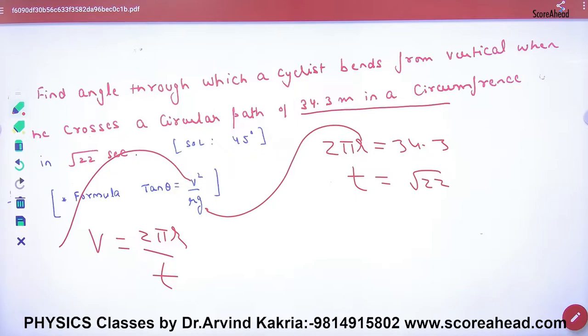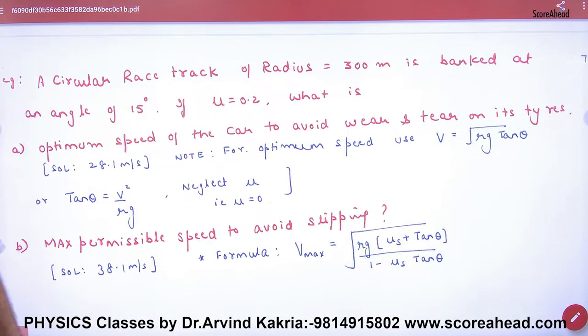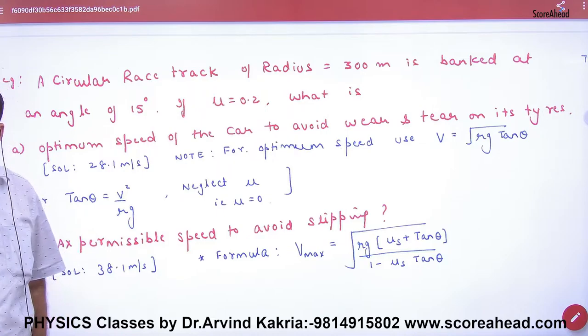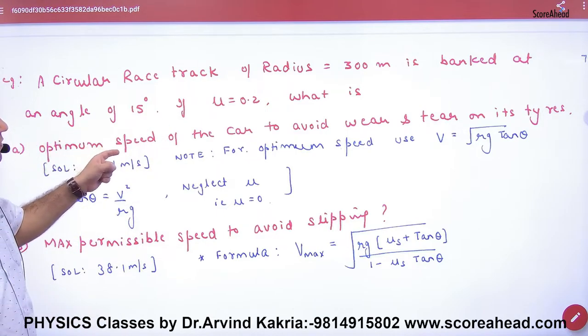Next. Circular race track of radius 300 meter hai, is banged at an angle of 15 degree. Aise angles aate hai 30 degree, 60 degree, 45 degree, aise aate hai. Mu given hai. What is the optimum speed of the car to avoid wear and tear on a tire?